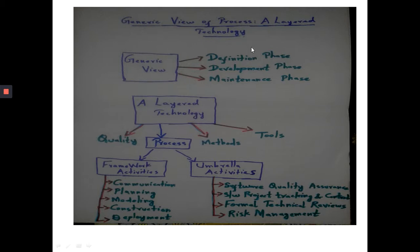As an overview of today's lecture: in the definition phase we discussed what is needed; in development, what is converted into how and how those things are achieved; in maintenance phase, what errors will be there and how they are rectified and what new things should be updated. In layered technology it is quality, process, methods, and tools. Communication takes place between software engineer and customer; planning covers how to achieve the target; modeling constructs the blueprint of software; construction covers coding and testing; and deployment is when the project is finally delivered to the customer.